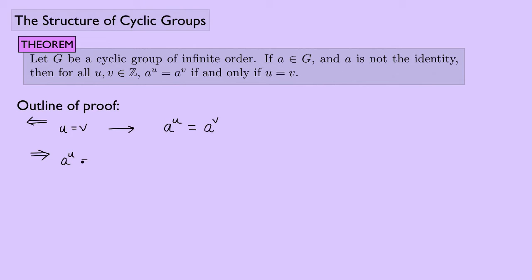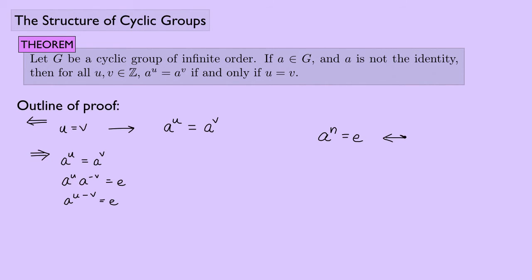The forward direction is trickier. Starting from A^U = A^V, we rewrite this as A^U · A^(−V) = identity, or A^(U−V) = identity. Since A has infinite order — as we just showed, A^n = identity only if n = 0 — it follows that U − V = 0, so U = V.